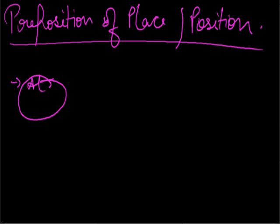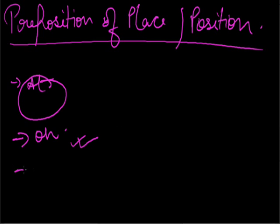'On' also tells us a position on a surface: 'The dictionary is lying on the table,' 'There is a big dark patch on the wall.' 'On' also means attached to: 'There aren't many roses left on the bushes.' 'In' in reference to a place or position suggests a position inside a large area and gives the idea of an enclosure: 'There was nobody in the office,' 'He was in a taxi.'